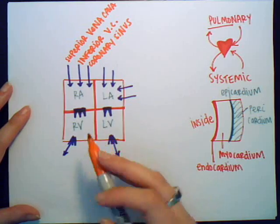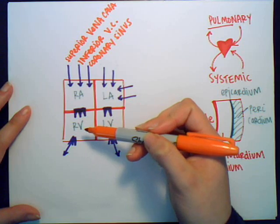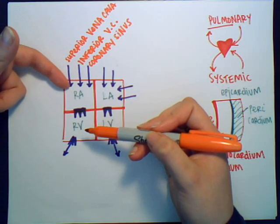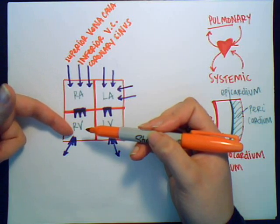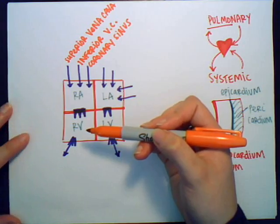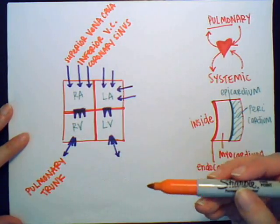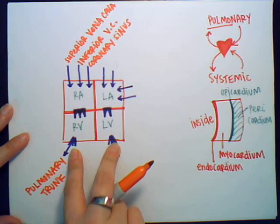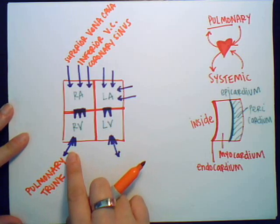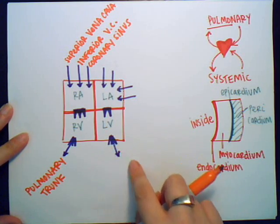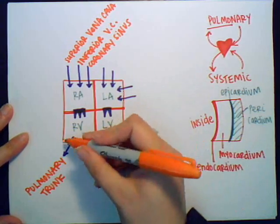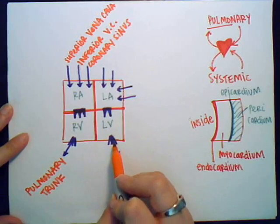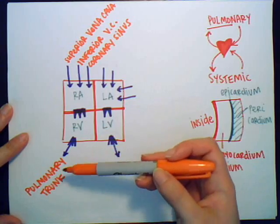From the right atrium, blood flows down into the right ventricle. This is deoxygenated blood that needs to be oxygenated, so it travels to the lungs via the pulmonary trunk. Both of the outflow valves are called semilunar valves. The one going to the lungs is the pulmonary semilunar valve, and the one on the other side is the aortic semilunar valve. So the four valves are: tricuspid, bicuspid, pulmonary semilunar, and aortic semilunar.